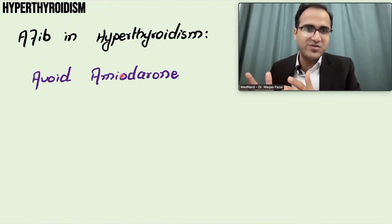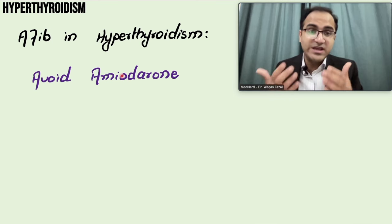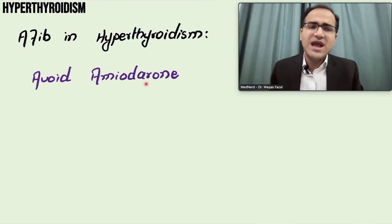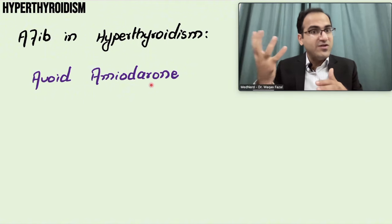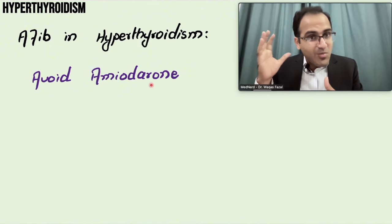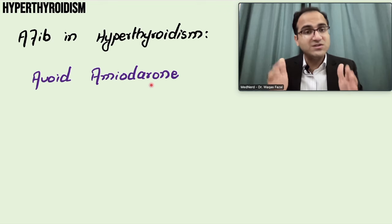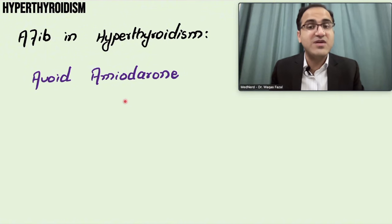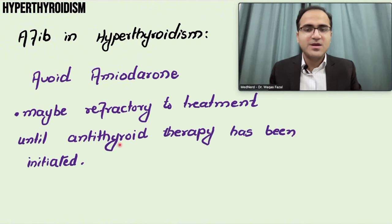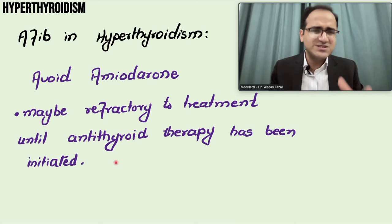Hyperthyroidism patients are very prone to atrial fibrillation and arrhythmias because of sinus tachycardia and an overworked heart. AFib is commonly treated with amiodarone for rhythm control, but remember: in patients with hyperthyroidism who have atrial fibrillation, do not use amiodarone, because amiodarone itself can cause hyperthyroidism. AFib may also be refractory to treatment until antithyroid therapy has been initiated, since you must treat the underlying cause first.